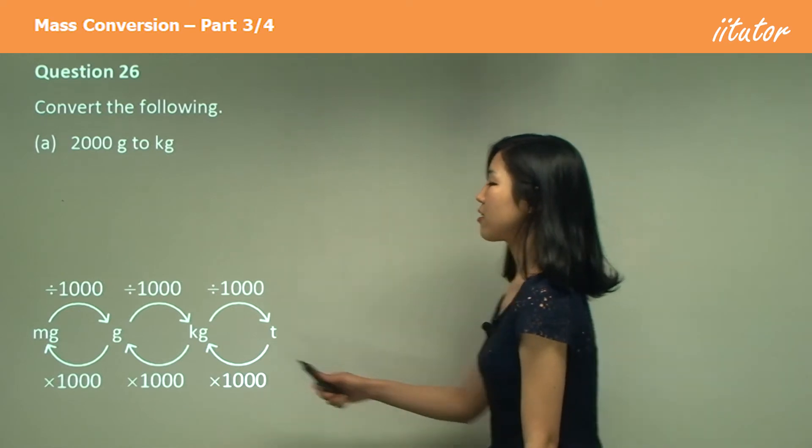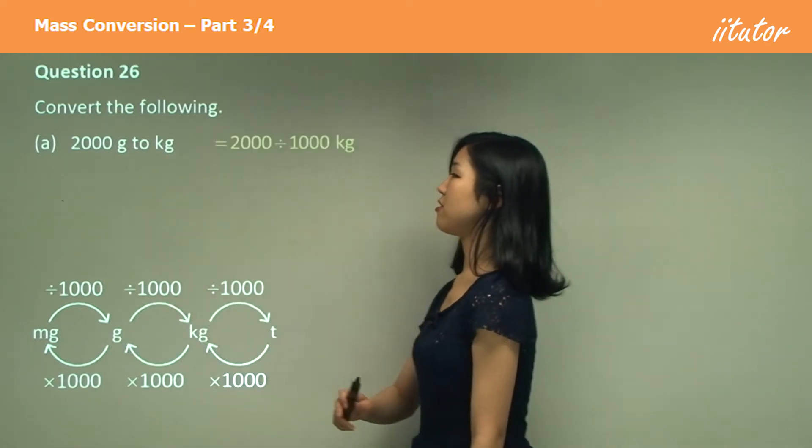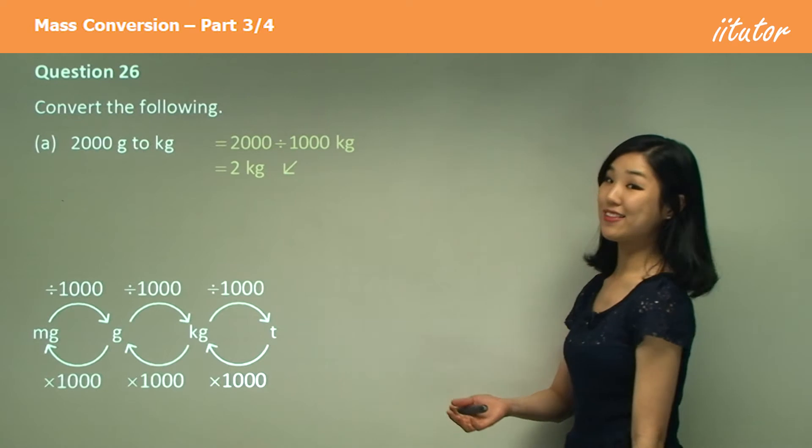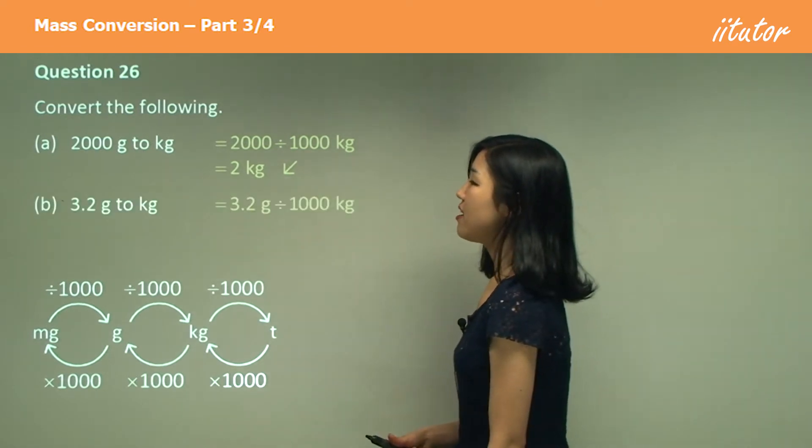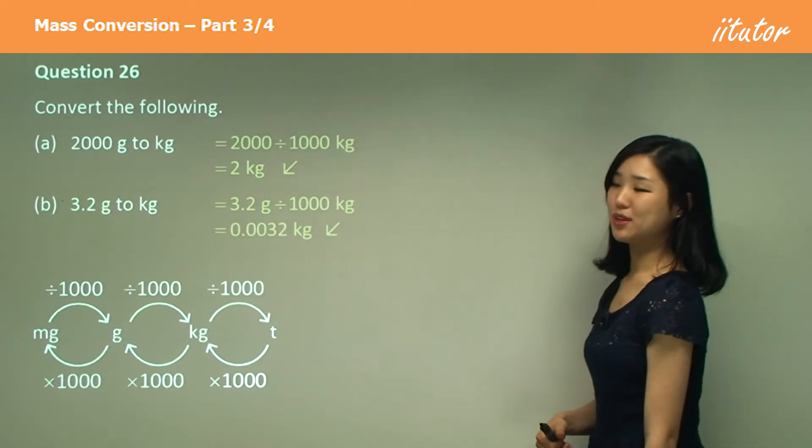Grams to kilogram, okay? Small to large, we divide. So divide by a thousand which simply gets two. And grams to kilograms again, divide by a thousand, you're going to get a small decimal number.